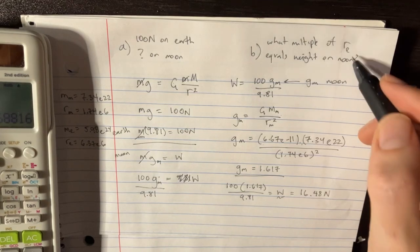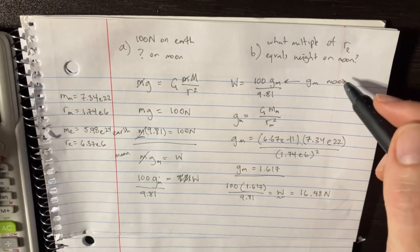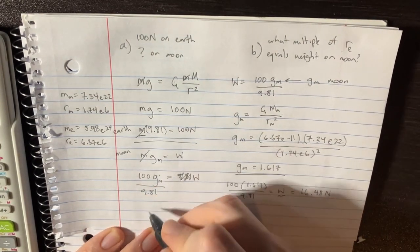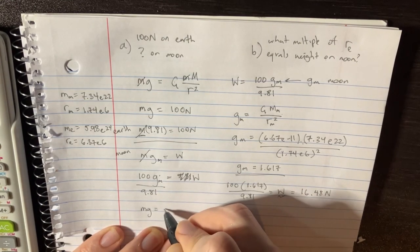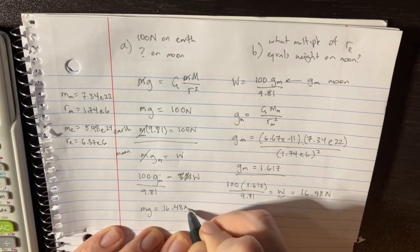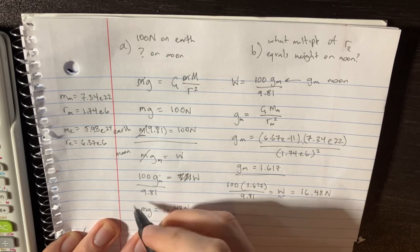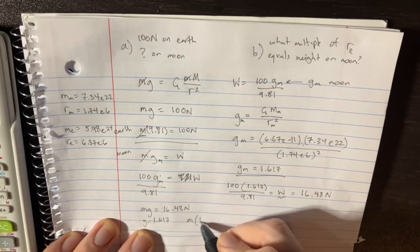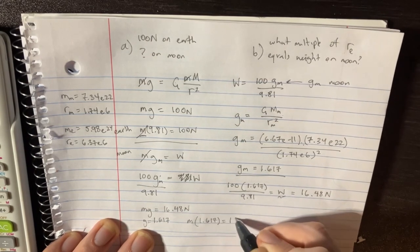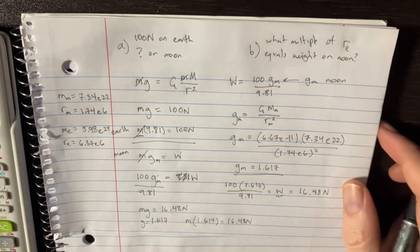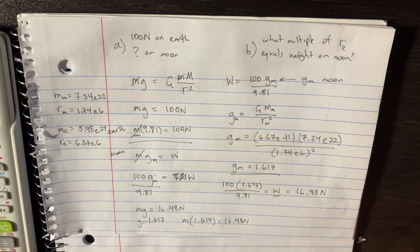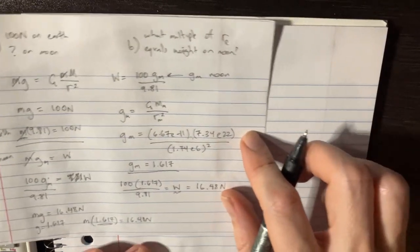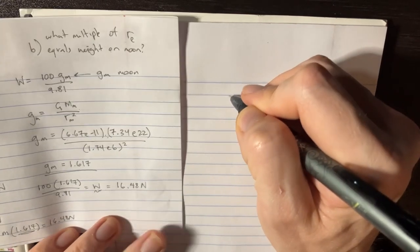Now from there, we want to think about the multiple of R_E that will equal the weight on the moon. In order for that to happen, keeping in mind that mg would have to equal 16.48 newtons. And in order for mg to equal 16.48 newtons, g must equal 1.617. Because we know that m times 1.617 is equal to 16.48 newtons. So we got to start calculating g of the earth. Let's check that out.